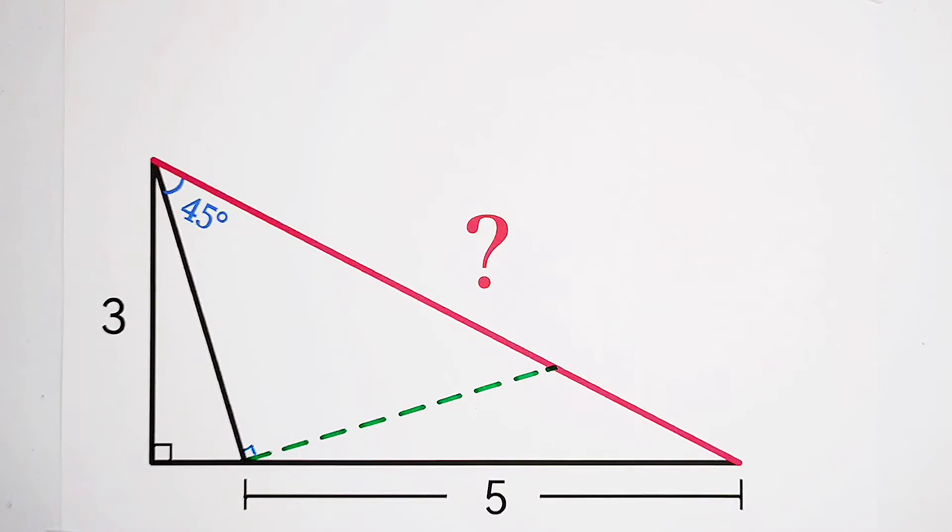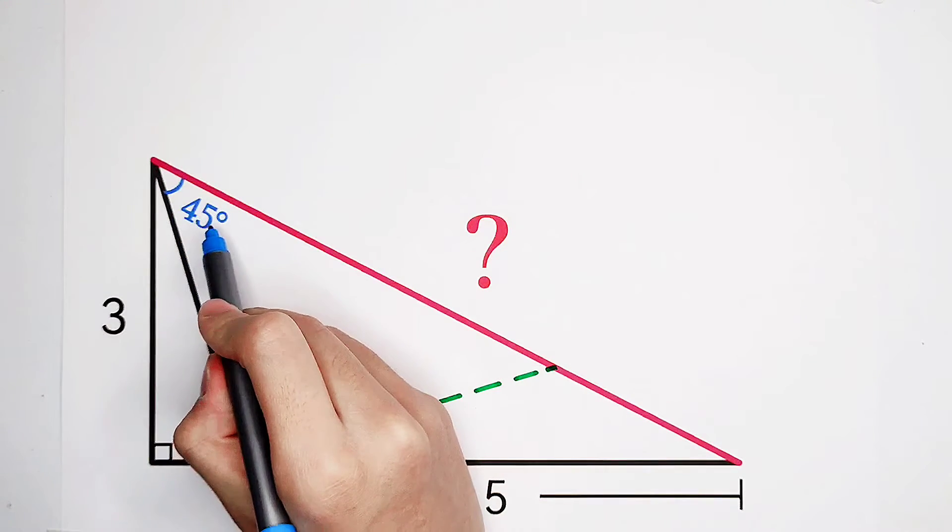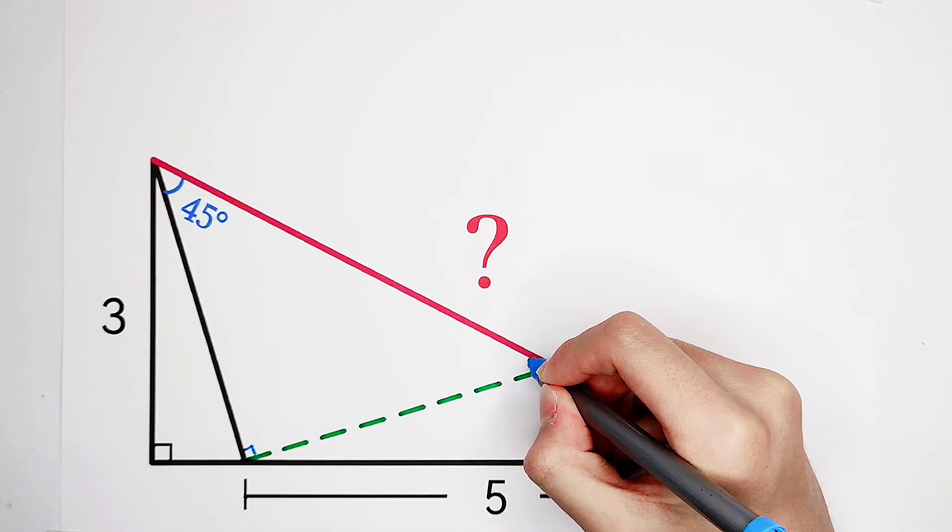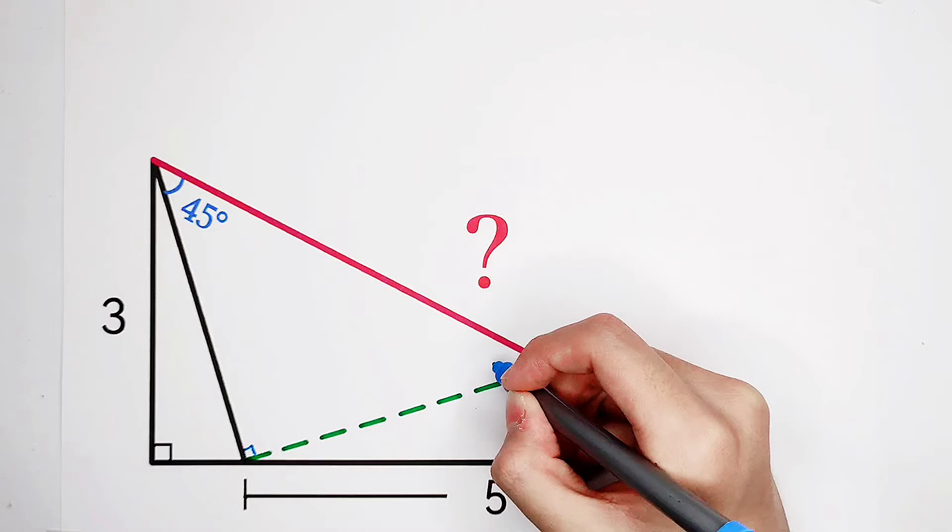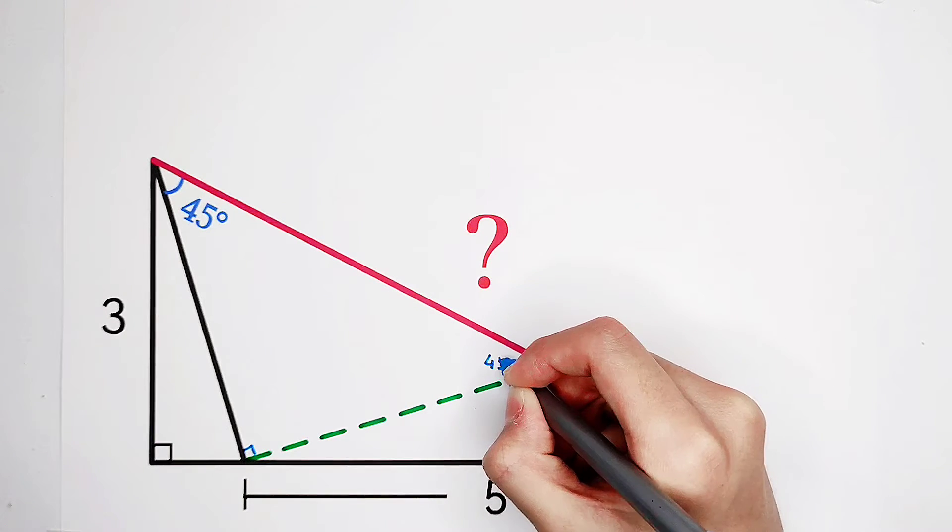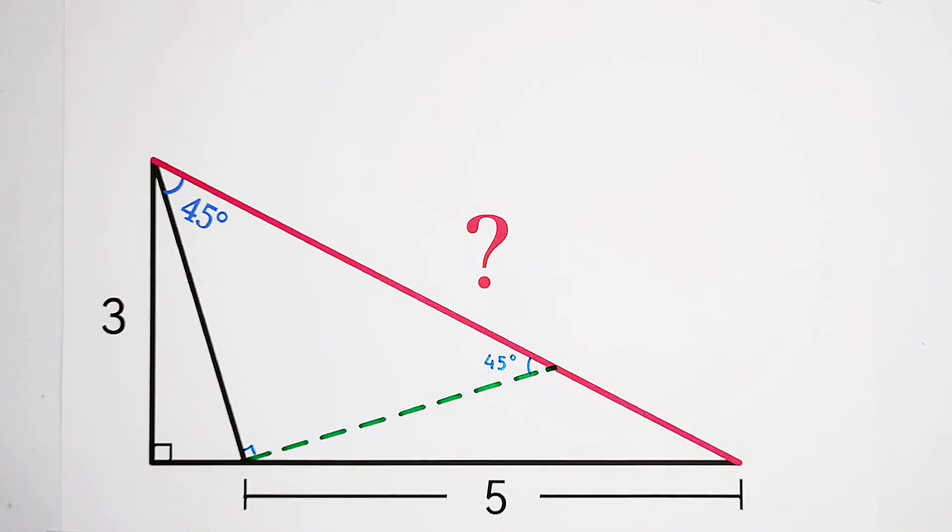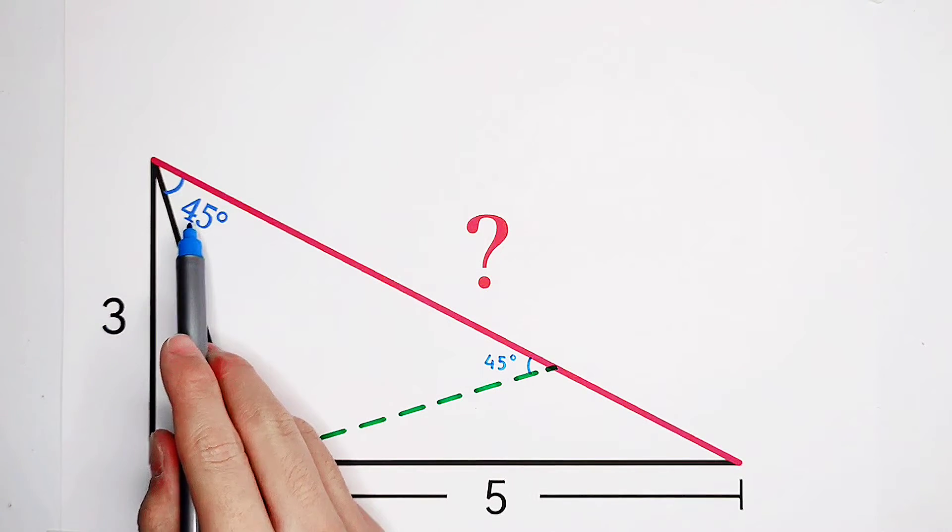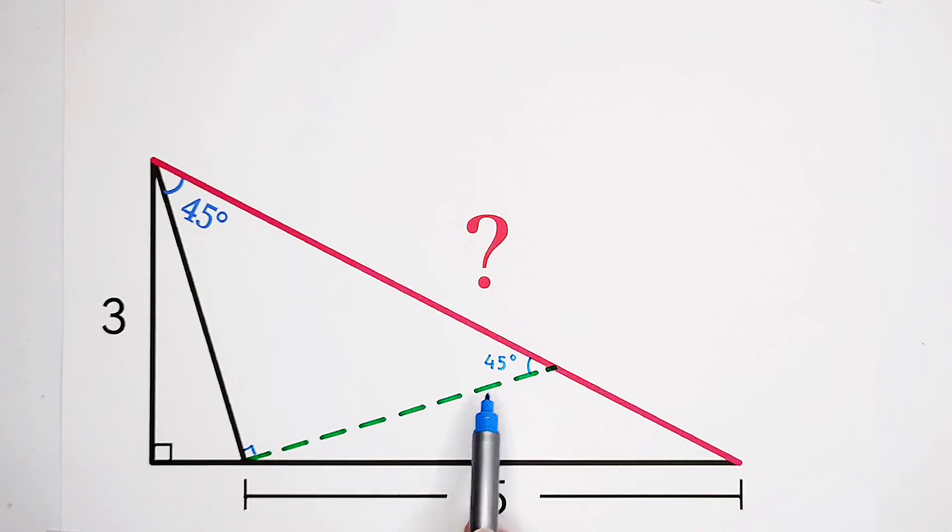Then what shall we do? Here is a right triangle, and this angle is 45 degrees. Of course, this angle we can also evaluate. It is also 45 degrees. Okay, now we get a triangle with angles 45 degrees, 45 degrees, and 90 degrees. It is a right triangle.